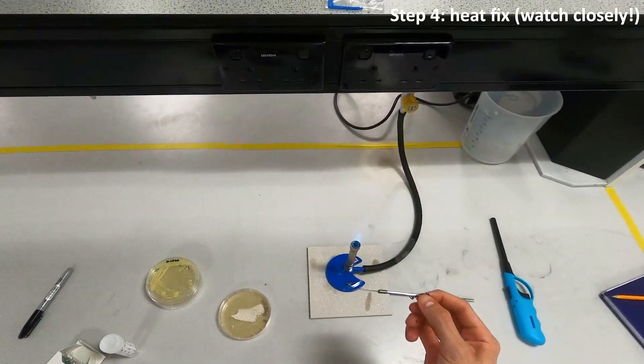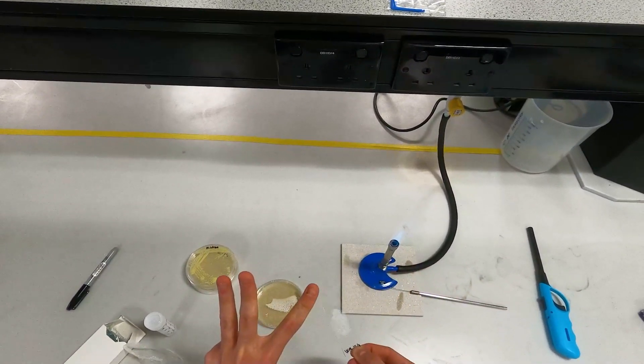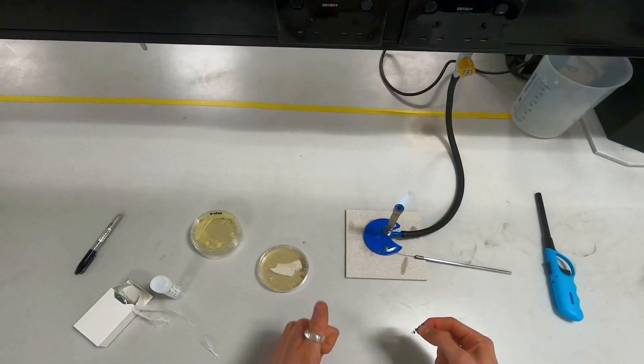And now all you need to do to heat fix it is pass it through one, two, three times into the flame. Well done, you've just heat fixed your first slide.